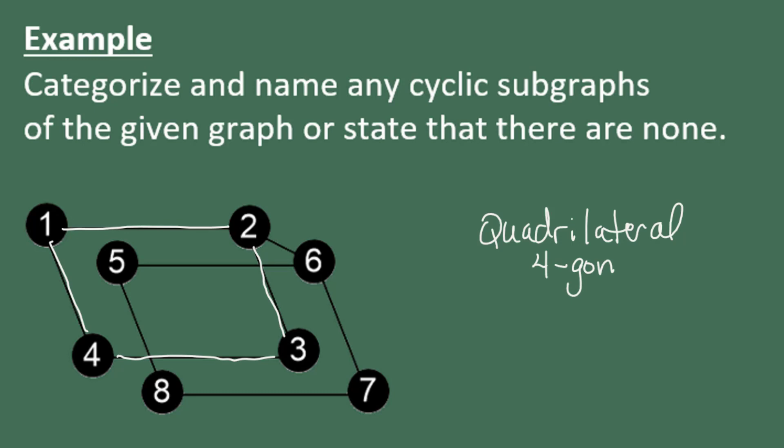To name any cyclic subgraph, you start at any one of the vertices contained in it. Like in this case, I'll just naturally start with vertex one, and then you list each adjacent vertex in either direction. So I can either go from vertex one to two or to four. I'm going to choose to go clockwise to two, and then from two we go to three, and then from three we go to four, and then from four we go back to one. We don't list one twice. It's already listed. We just put parentheses around the list. So within this larger graph we have the quadrilateral cyclic subgraph one, two, three, four.